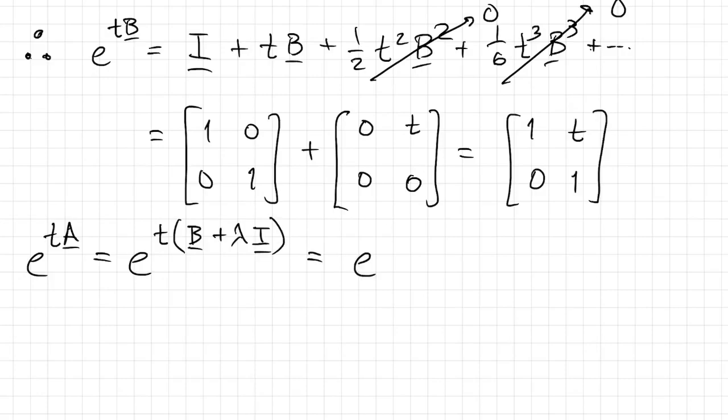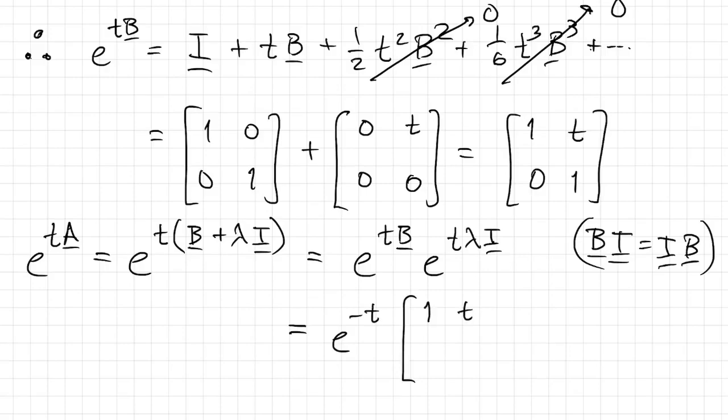So we have the exponential of the sum of two matrices. We can write that as the product of two exponentials because those two matrices do commute. B times I equals I times B. Remember, that's a condition for splitting up the exponential that way in the matrix case. And then lambda is negative 1. E to the negative tI is just e to the negative t. And there's our e to the tB. And we have our answer.